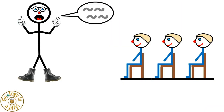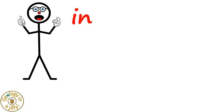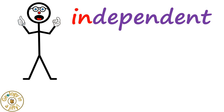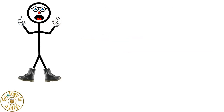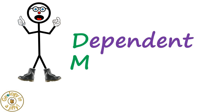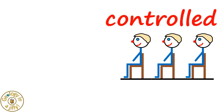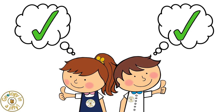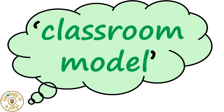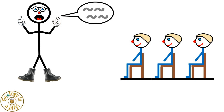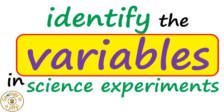Our classroom model of a teacher instructing their students: the teacher being in charge is the independent variable that we change; the teacher also wearing DM boots, reminding us that the dependent variable is the one that we measure; and the students representing the controlled variable are all doing the same. Aren't the variables easy to remember now, using our classroom model to identify the variables in science experiments?